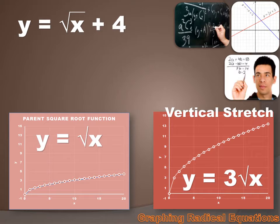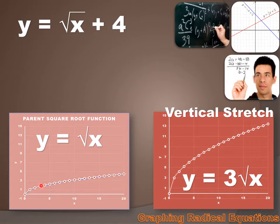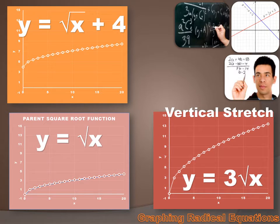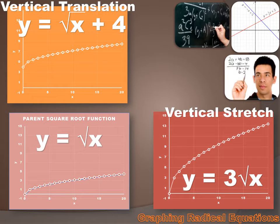How about this function: y equals the square root of x plus 4? We're not stretching the parent function here. All we're doing is adding 4 to each value — in other words, we're lifting this whole parent function up by 4 units. The intercept of the y-axis is not at 0; it's at 4. And we call that a vertical translation.